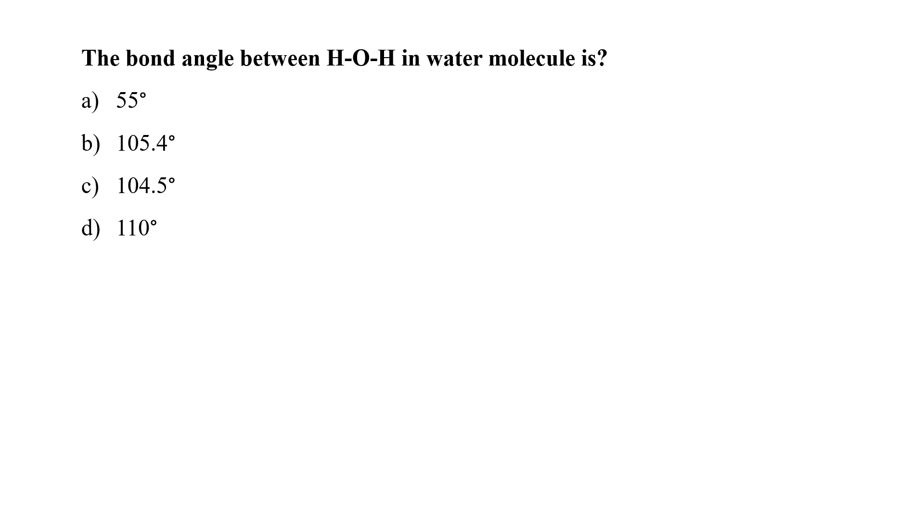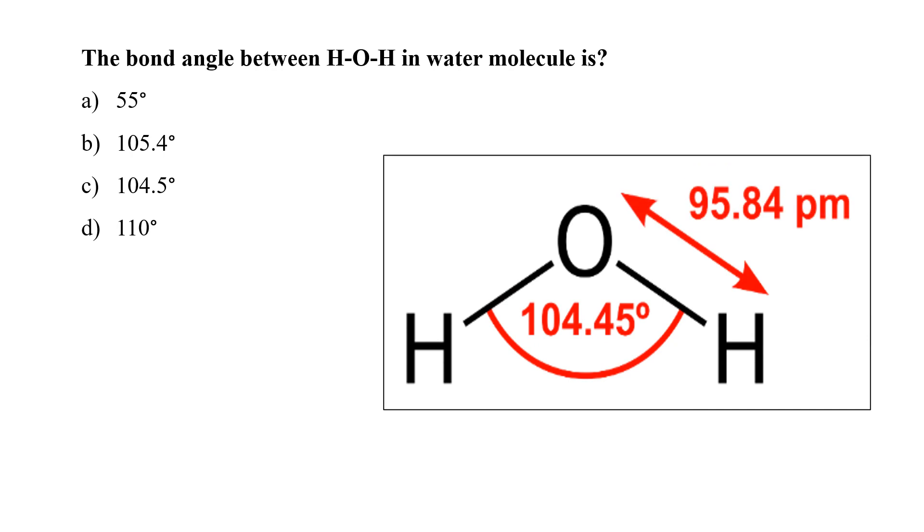The bond angle between HOH in water molecule is 55 degree, 105.4 degree, 104.5 degree, or 110 degree. If you can see in the diagram, the bond angle in water is 104.5 degrees due to the presence of two lone pair of electrons. So option C is the correct answer.